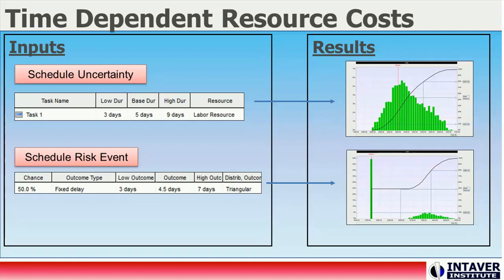Work-based resource costs can be risked as part of an integrated approach of cost, schedule, and risk analysis. Both schedule uncertainty and risk events impact work-based resource costs. Here we show how schedule uncertainty and risks are presented on a combined histogram and cumulative probability chart.